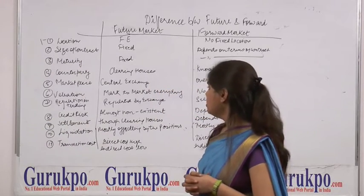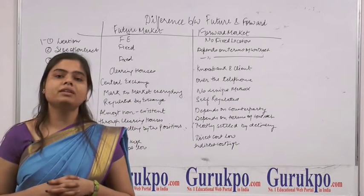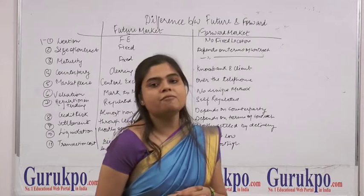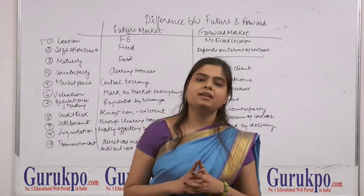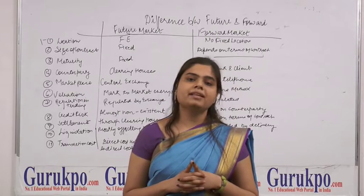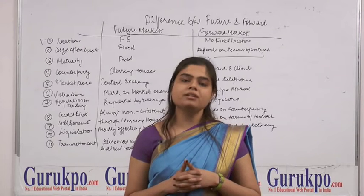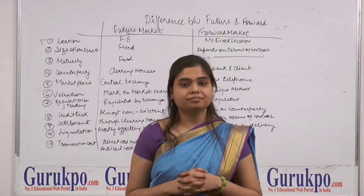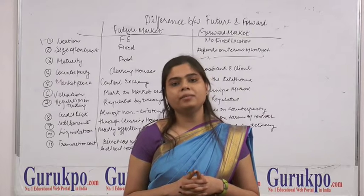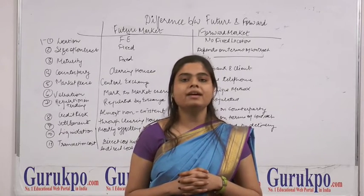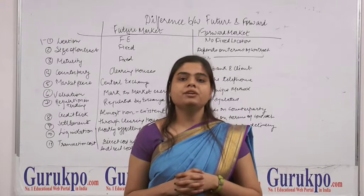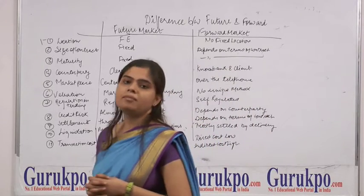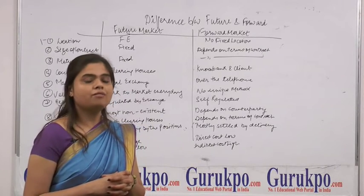The next difference is valuation. In the futures market, valuation is based on the mark-to-market concept, which means a daily margin concept. There are two types of margin: initial margin, deposited by the investor at the time of initiating the contract, and maintenance margin, which is a specified limit maintained by investors. If the margin goes below this limit, the investor is required to deposit additional margin to the exchange. In the forward market, there is no unique method applied for margin or valuation.